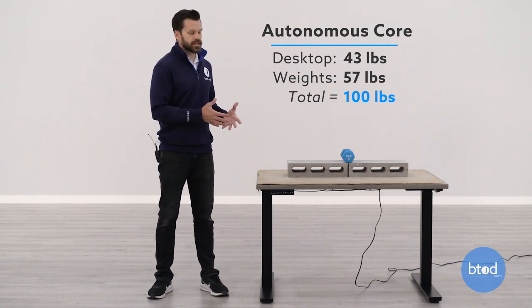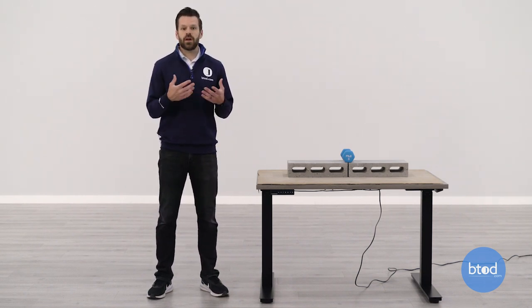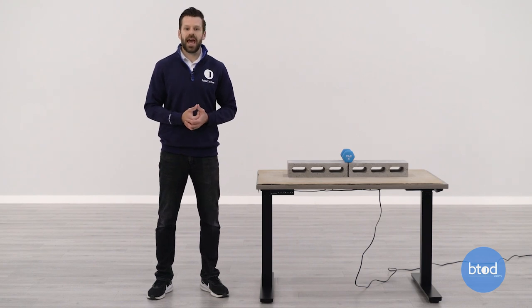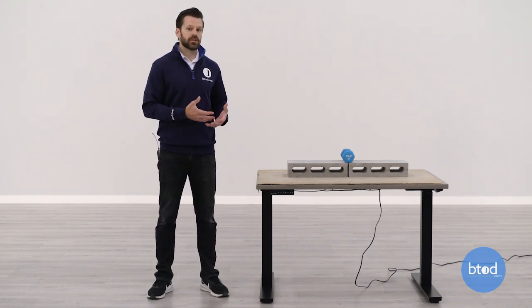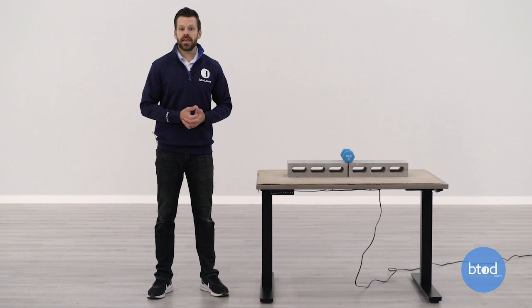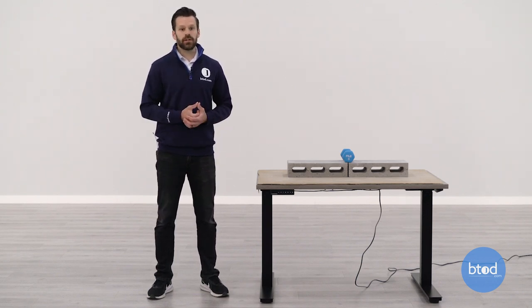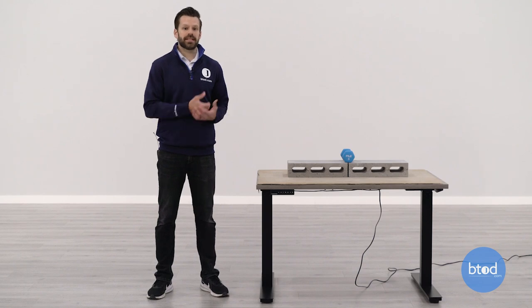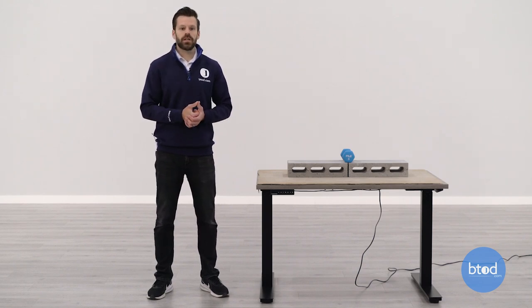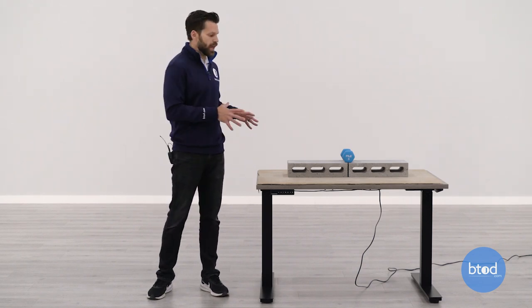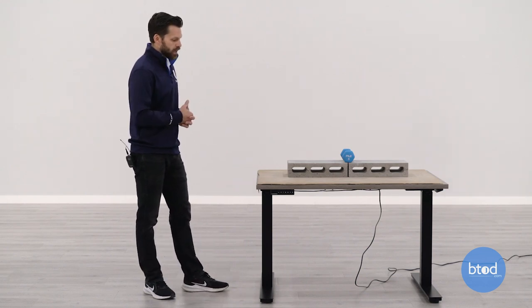This desk has a range that starts at about 29 and a half inches, and it will go up to about 48 and a half inches. This is going to allow us to look at four specific heights today, and it has a capacity of about 300 pounds, so we're going to be able to look at three different weight capacities at those various ranges of height. With that, let's go ahead and take a closer look at the desk at its first setup.